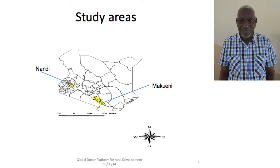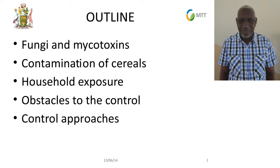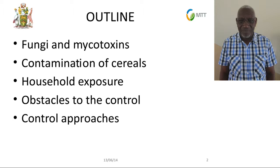The two sites were selected based on a number of factors. One factor was whether the site had any previous cases of human aflatoxicosis. Makweni is in that category. Nandi, on the other hand, did not have any human cases of aflatoxin, but we had evidence of very high cases of esophageal cancers, which were already associated with another toxin — not aflatoxin, but fumonisin. The other criterion was on maize growing. Nandi was growing a lot of maize, while Makweni was maize-deficient, relying mostly on imports from other parts of the country.